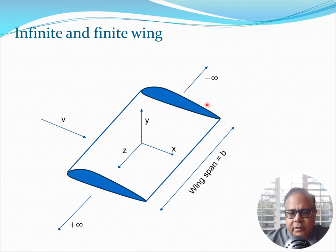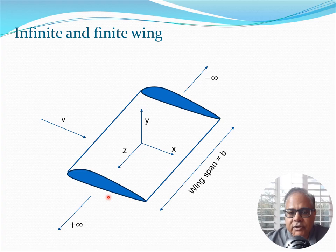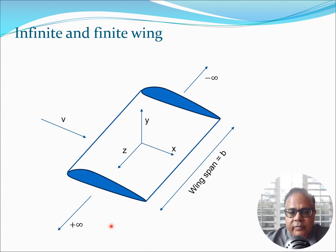Now if we look at a typical aircraft wing — or it could even be a rotor blade or a wind turbine blade — you will see that the sections are something like this, which I have shown in blue here. These are the wing sections which are typically airfoils. But when we assume only airfoil cross sections and derive the different equations for CL, CM, CD and so on, we are essentially assuming an infinite wing that goes from minus infinity to plus infinity. We try to create this situation in a wind tunnel where we block both ends, but in reality that is not possible, so there is going to be flow from below the wing to the top surface.